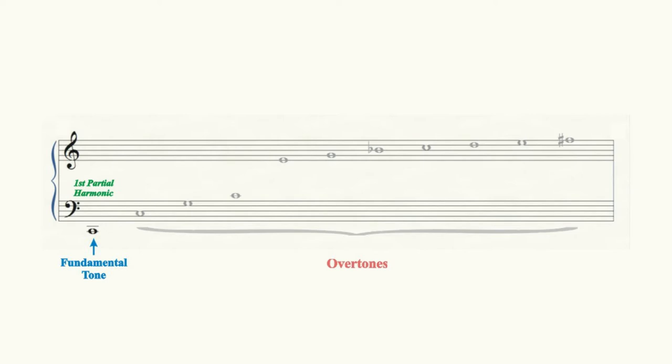But their existence and order of occurrence within each and every tone provides a blueprint for relationships between the overtones that helps our brains organize and make sense of the music that we hear.